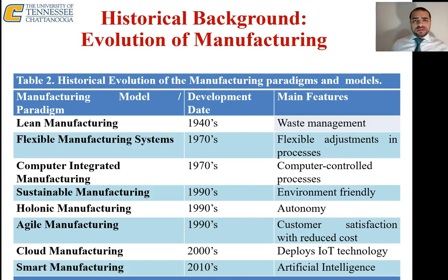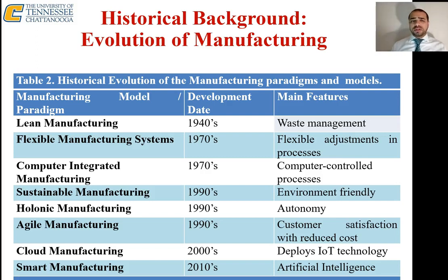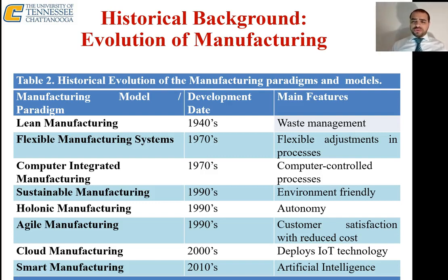Before we proceed, let's look at the history and evolution of manufacturing, since most of you will be going through the manufacturing industry. Let's look at the historical evolution of manufacturing paradigms. Lean manufacturing — you've all probably heard of that — was initiated in Japan in the 1940s and is still very effectively used today. Its main feature is waste management.